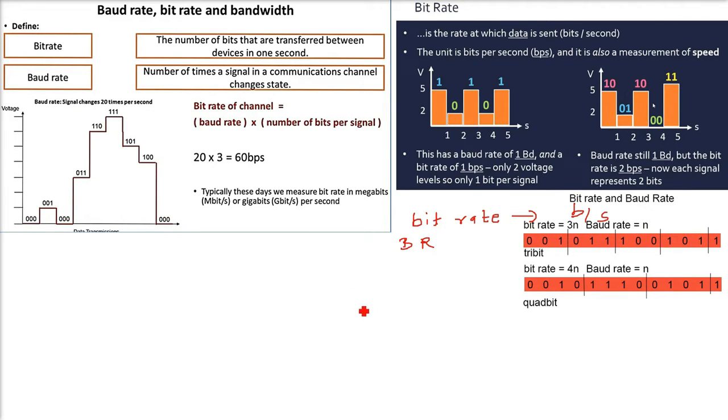I will give an example. See here. We have 000. These are 3 bits. That is the number of bits per signal is 3. Number of bits per signal you see 001, 000, all these are number of bits per signal. There are 3.